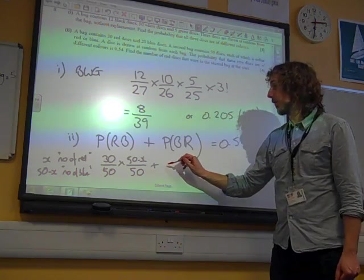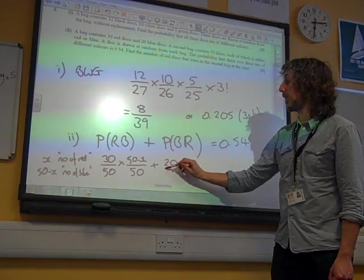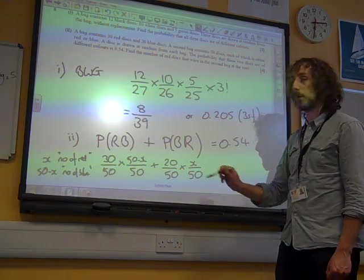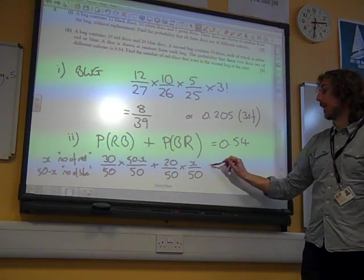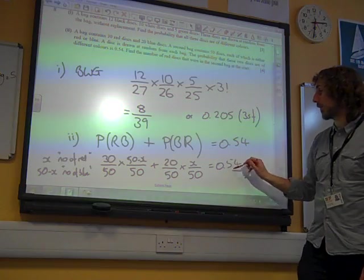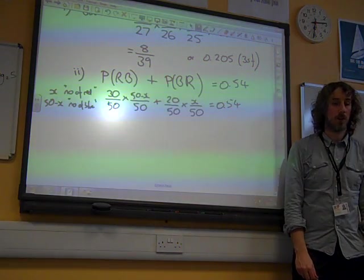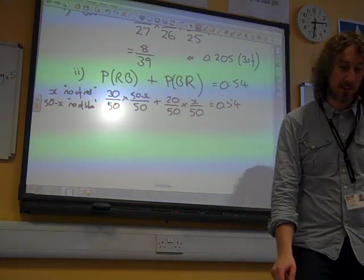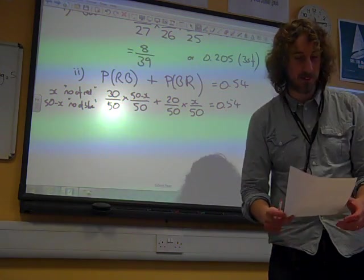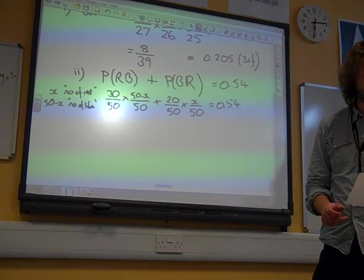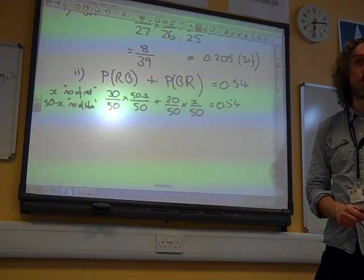And here we've got a blue in the first bag, which is 20 over 50, times a red in the second bag, which is x over 50. And all of this is 0.54. And so having set up this equation, this is now quite neat, isn't it, that we've ended up with this equation. We've just got to solve this for x. That's all that we need to do.